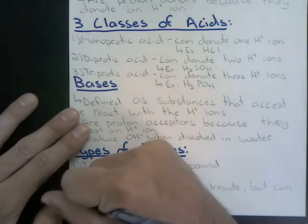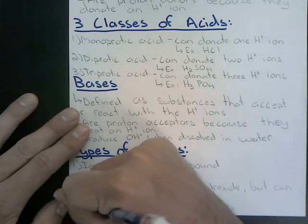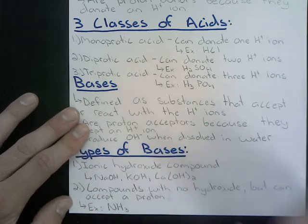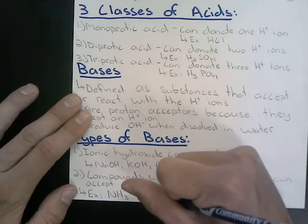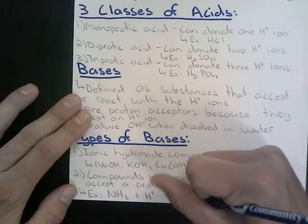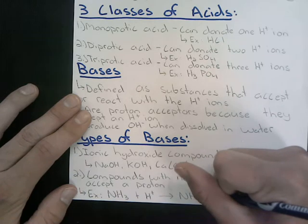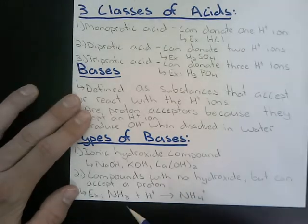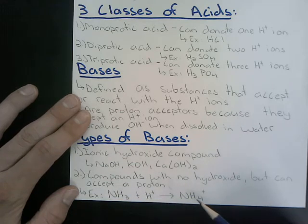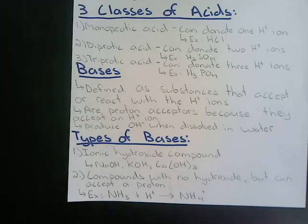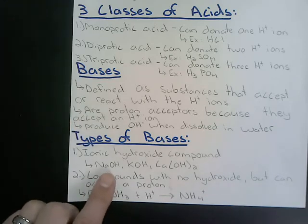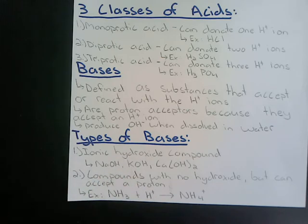NH3 can accept a proton — hypothetically, if it accepts an H+ ion, it can form the ammonium ion. Because our NH3 ammonia compound accepted that H+, by definition we classify it as a base. Notice how it did not have hydroxide, but it could still accept a proton.